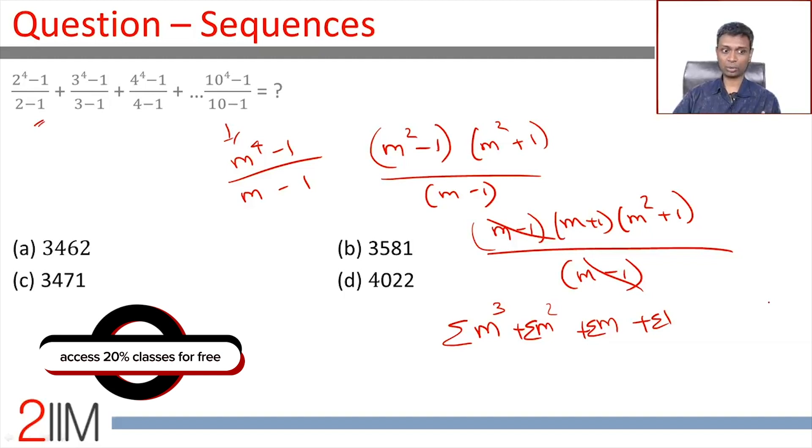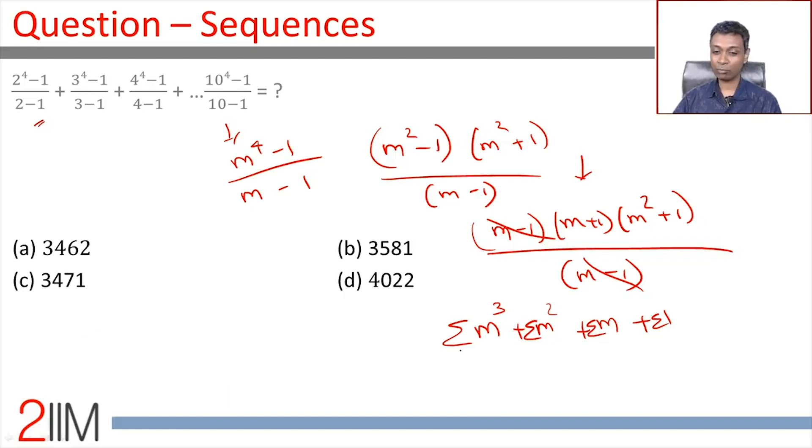Be very clear about that, otherwise we will walk all the way there and then end up marking just the wrong answer. This simplification works like this, but in doing sigma m^3 for this question, m goes from 2 to 10 not 1 to 10. Sigma m^2 from 2 to 10 not 1 to 10, 2 to 10 not 1 to 10.